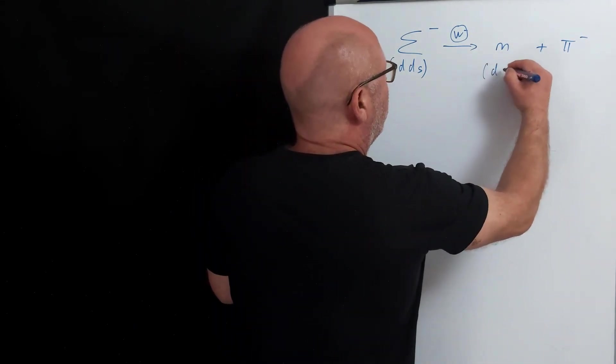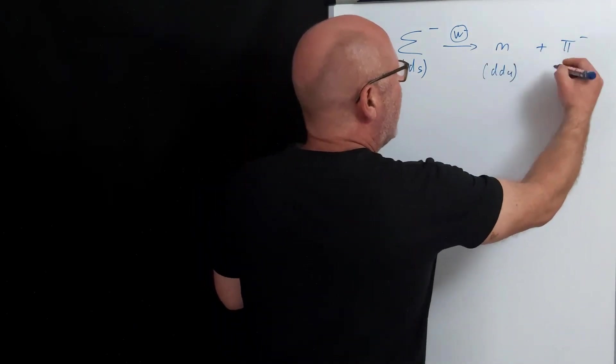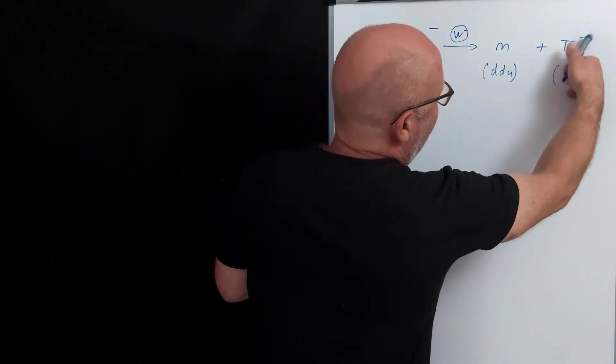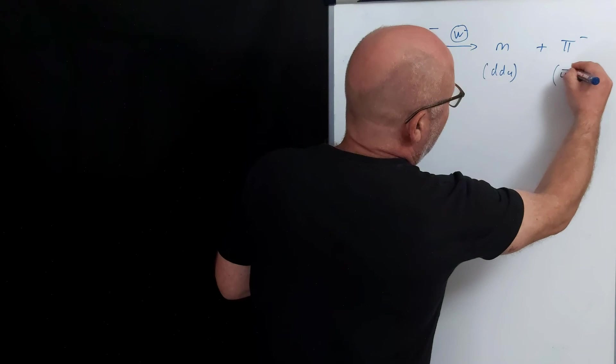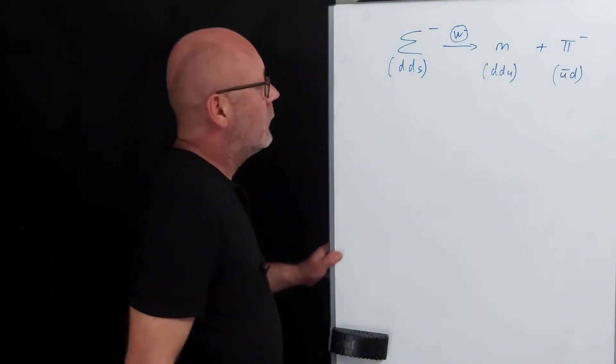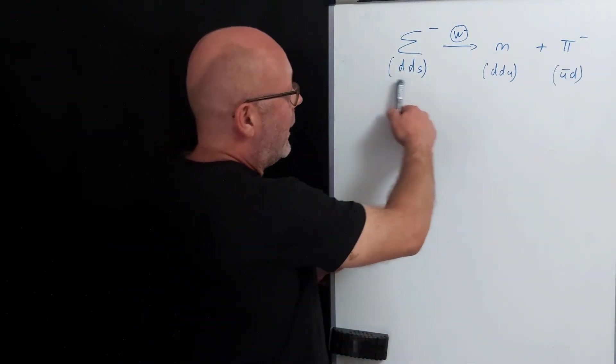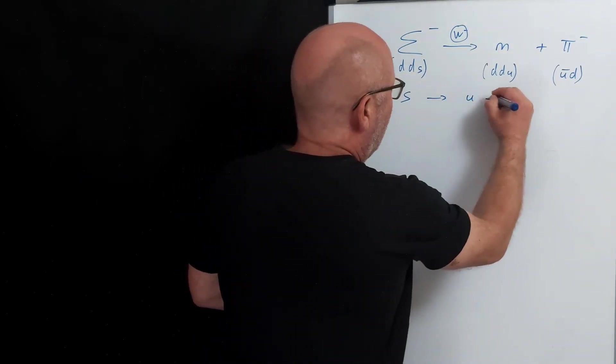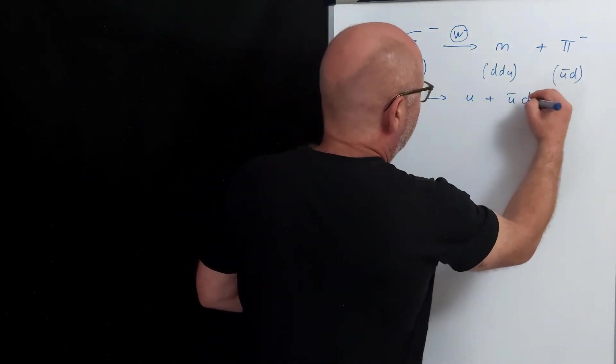Let's find the composition of the products. A neutron is ddu. And the π-, it's going to be up and down. And to have a minus, I need to have an anti-up down. Now, let's simplify this to get rid of the downs. So we've got s giving you an up plus an anti-up down plus a down.